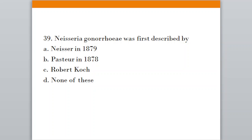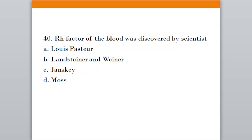Question number thirty-nine: Neisseria gonorrhoeae was first described by. Option A, Neisser in 1879; Option B, Pasteur in 1878; Option C, Robert Koch; Option D, none of these. The correct answer is option B, Pasteur in 1878. Question number forty: The Rh factor of blood was discovered by. Option A, Louis Pasteur; Option B, Landsteiner and Wiener; Option C, Jansky; Option D, Moss. The correct answer is option B, Landsteiner and Wiener.